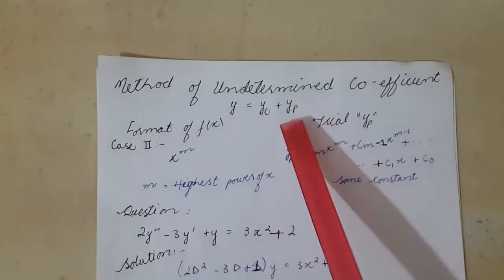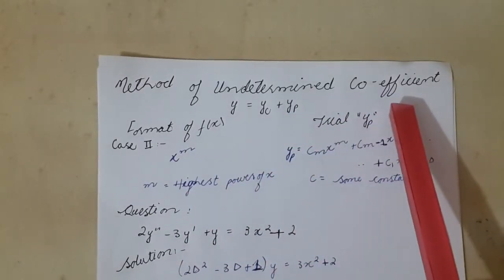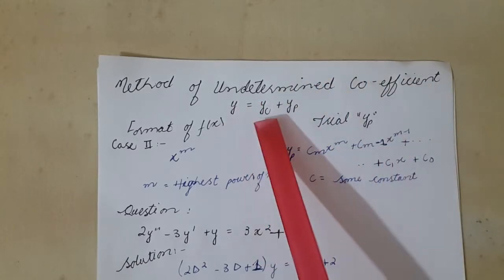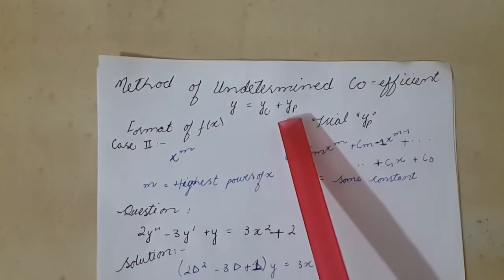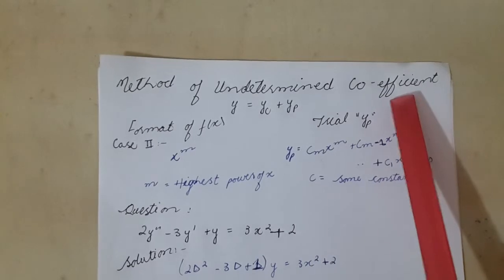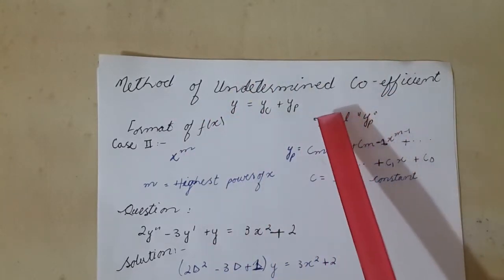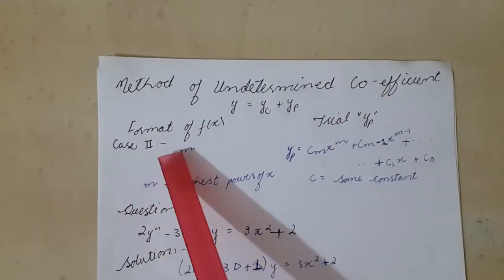Today we will use the method of undetermined coefficients for our final solution y = yc + yp. In this method we suppose trial yp. This method consists of 8 cases, from which I will describe case 2.